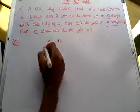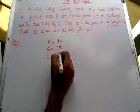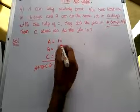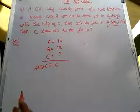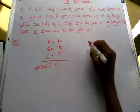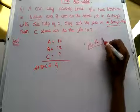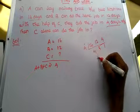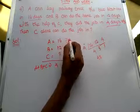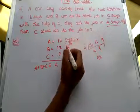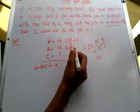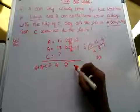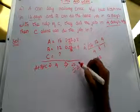Our next problem: A can complete a work in 16 days, B can complete in a certain number of days, and C can also complete it. The LCM is 48. Dividing: 48 divided by 16 equals 3, and 48 divided by 16 equals 3 for B as well. Here we don't know C's value, but 48 divided by 4 equals 12.